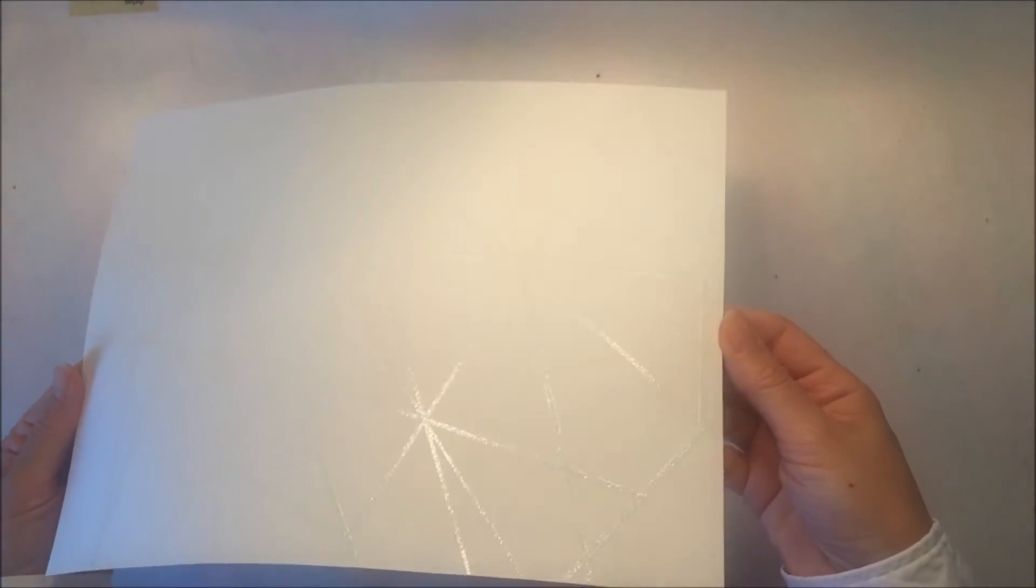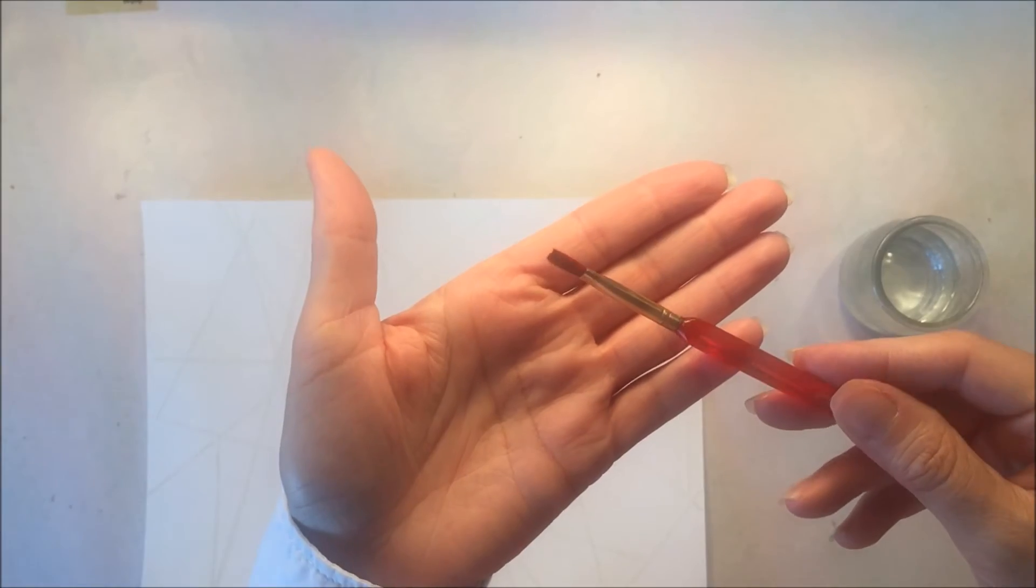This is what it looks like when it's fully embossed. It's a little bit hard to see, but there are quite a few shapes on the page. Now we're going to watercolor this.